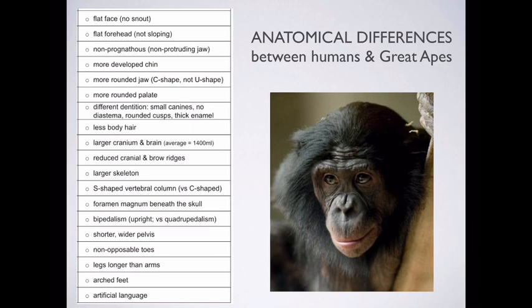The vertebral column in human beings has an S-shape, whereas the other great apes have a more C-shaped vertebral column. Don't get the C-shape of the vertebral column confused with the C-shape of the rounded jaw — make sure you've got those two the right way around.